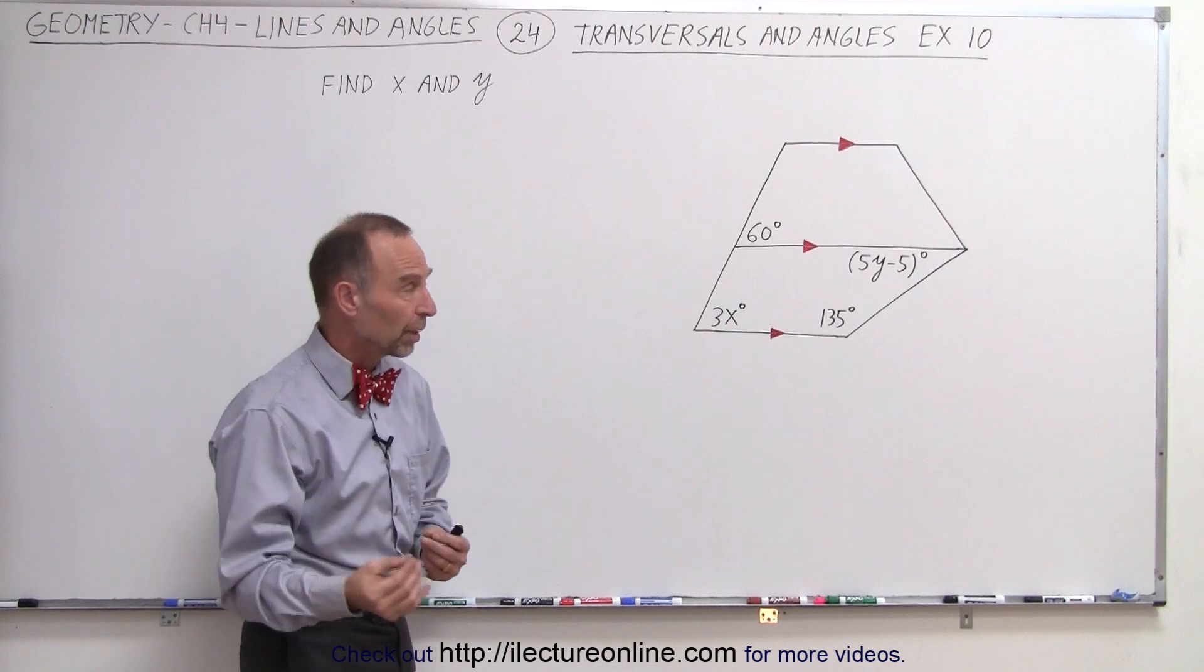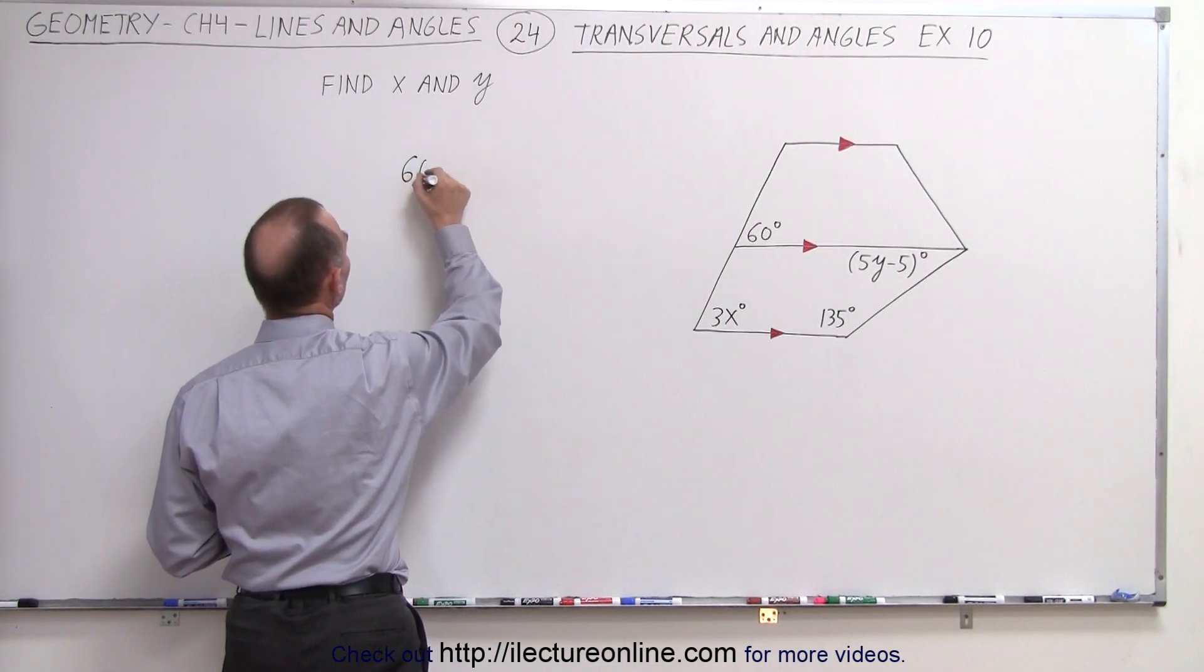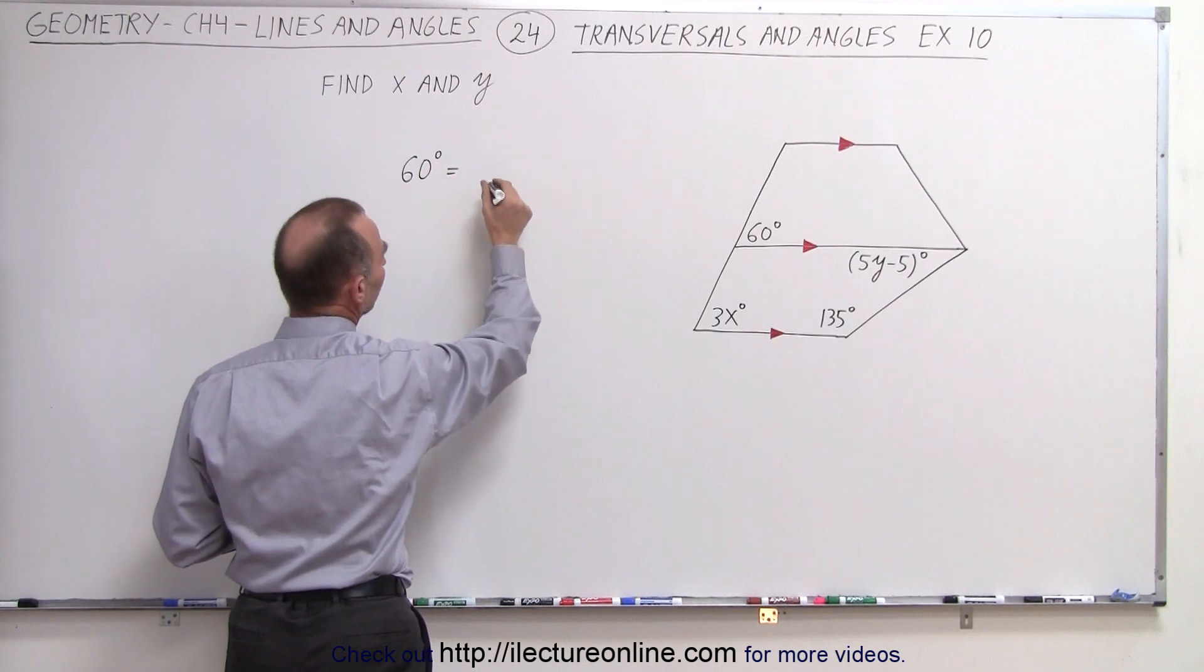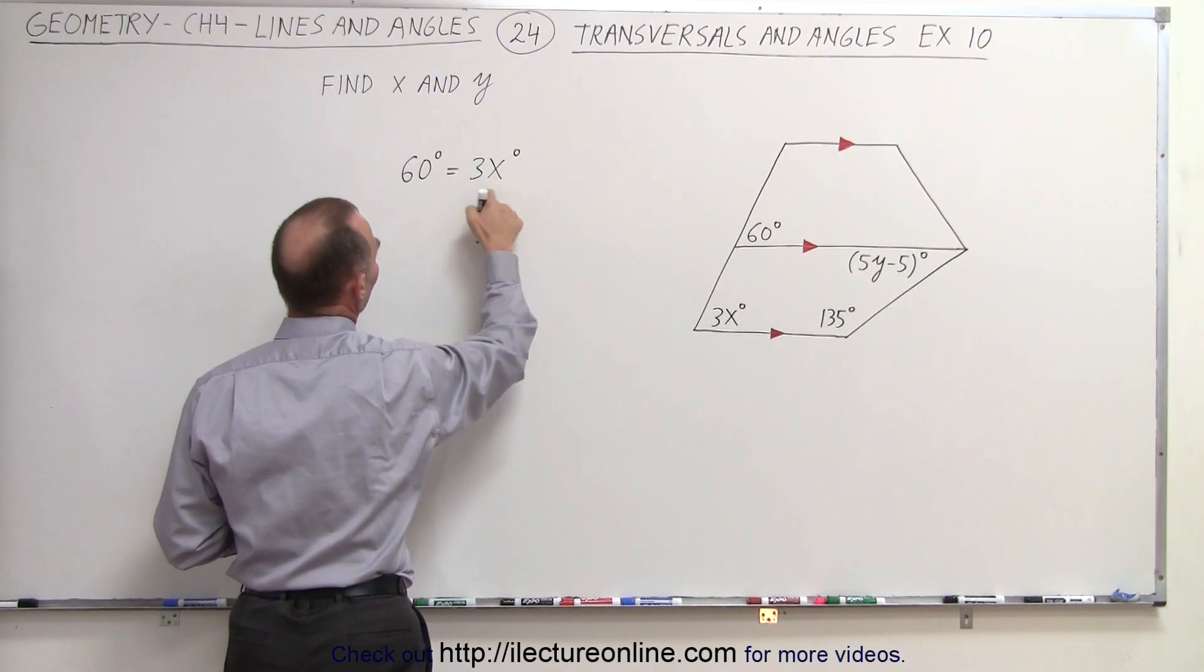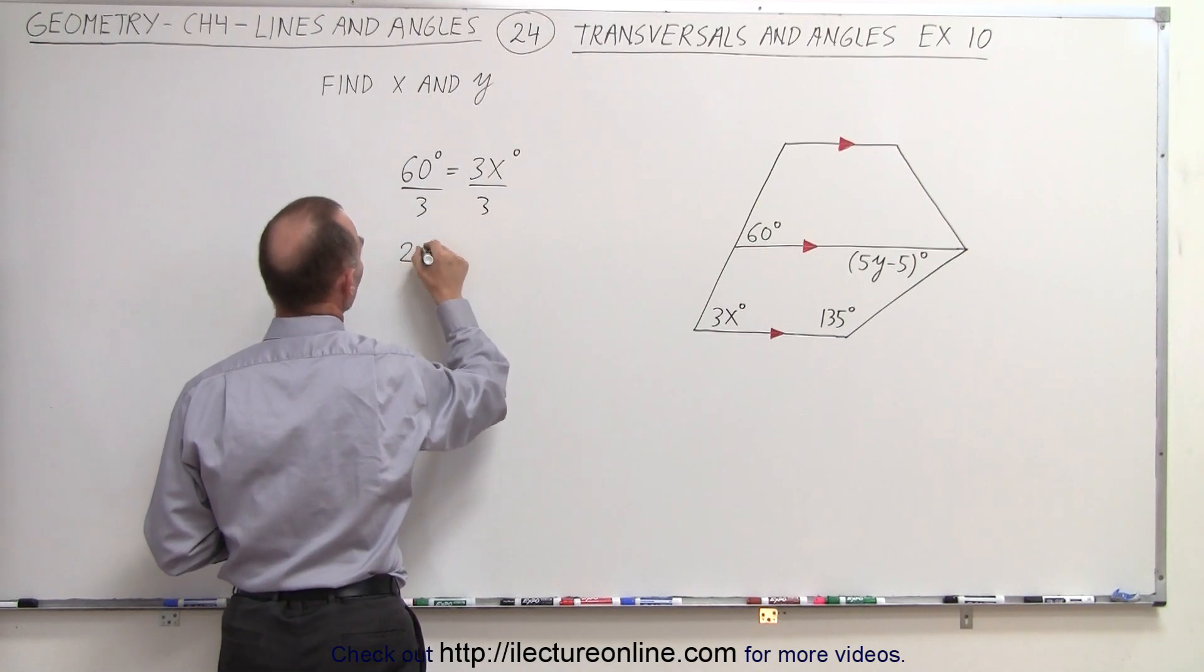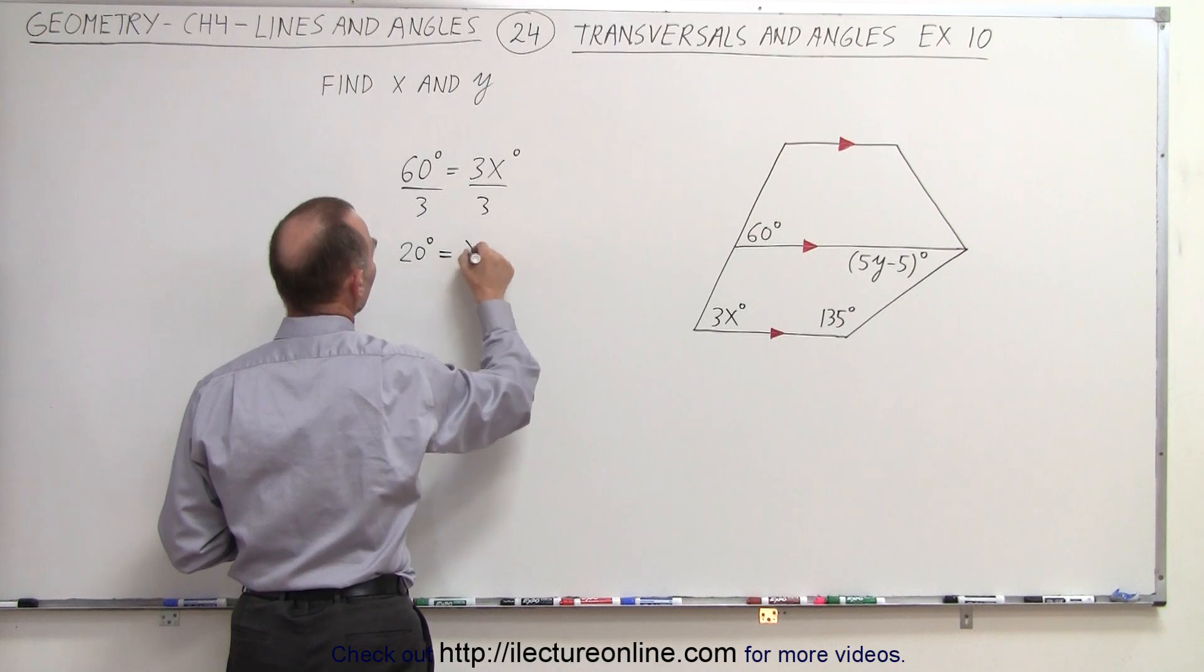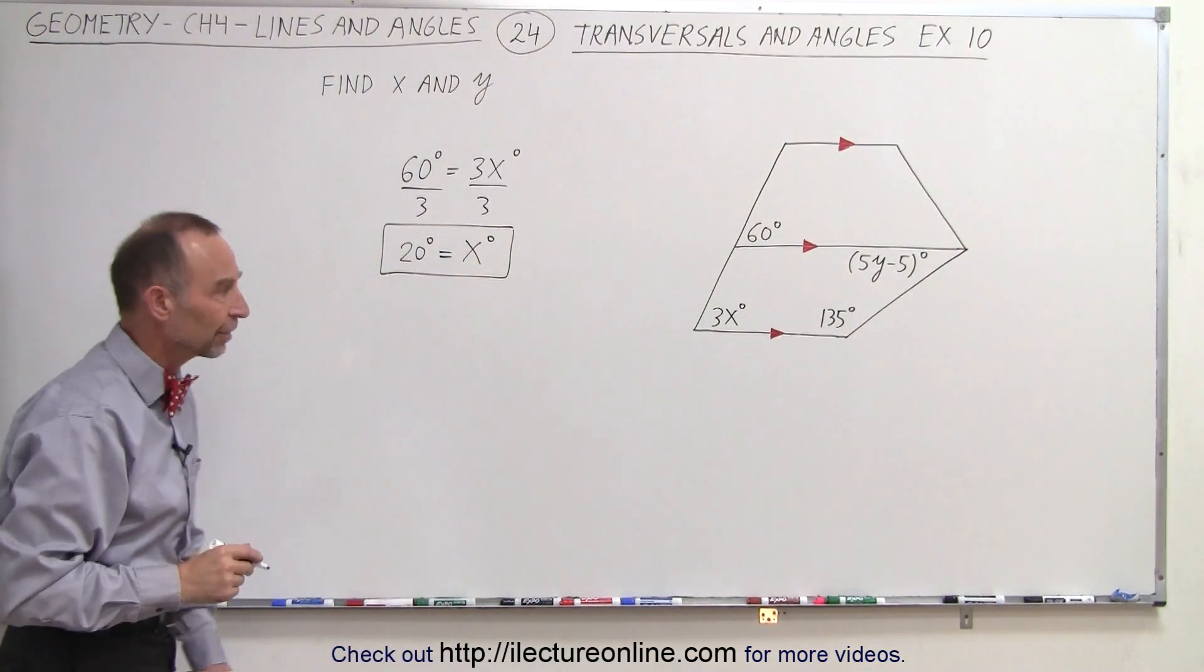And we know that the measure of corresponding angles must be equal, which means that the 60 degrees must be equal to 3x degrees. And so if we now divide both sides by 3, we can see that 20 degrees equals x degrees. So there's our first correspondence. We have found the value for x.